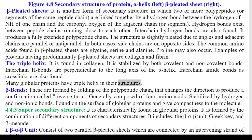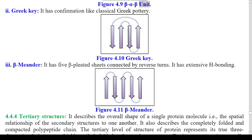Bends: formed by folding of the polypeptide chain that changes the direction to produce a conformation called a reverse turn; generally composed of four amino acids; stabilized by hydrogen and non-ionic bonds; found on the surface of globular proteins and give compactness to the molecule. 4.4.3 Super-secondary structure: characteristically found in globular proteins; formed by the combination of different components of secondary structures. It includes: 1) Beta-alpha-beta unit — consists of two parallel beta pleated sheets connected by an intervening strand of alpha helix (Figure 4.9); 2) Greek key — has a conformation like classical Greek pottery (Figure 4.10); 3) Beta meander — has five beta pleated sheets connected by reverse turns with extensive H bonding (Figure 4.11).